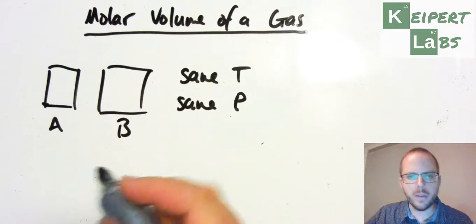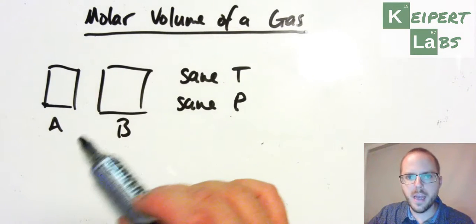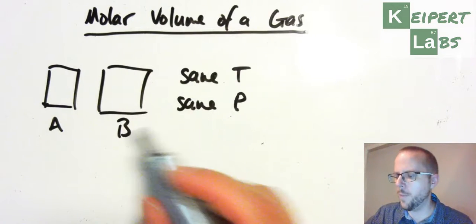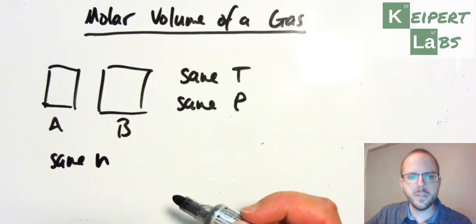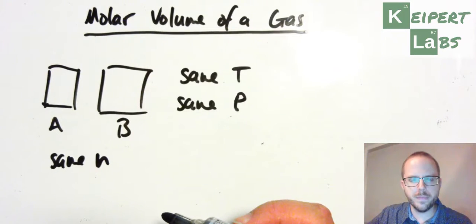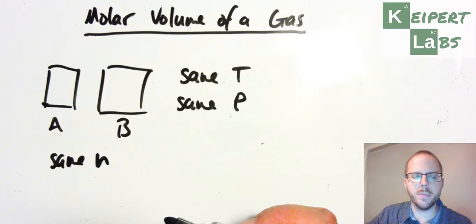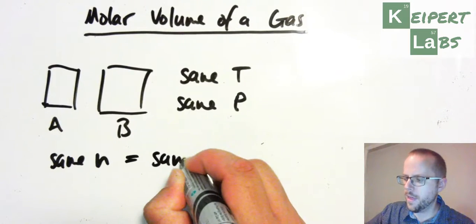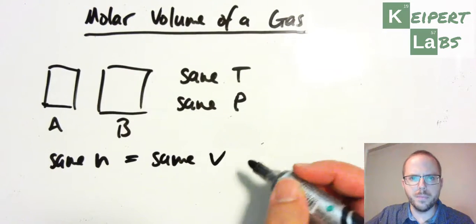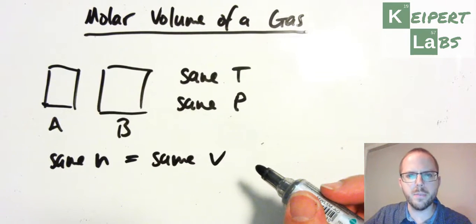So then what we then said was, alright, let's flip it around. If we've got samples of two gases at the same temperature and pressure, and what we know is that if we can have the same number of particles of each gas, like if we know that a sample of gas A and a sample of gas B have the same number of particles, we can then say that they will take up the same volume. So you can see that we've just flipped the direction around, but we're using this same principle.